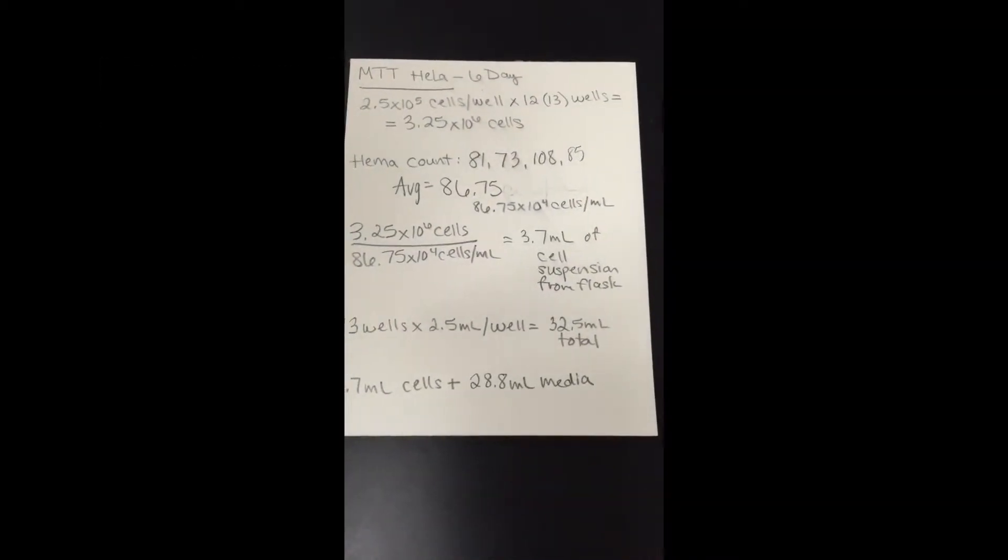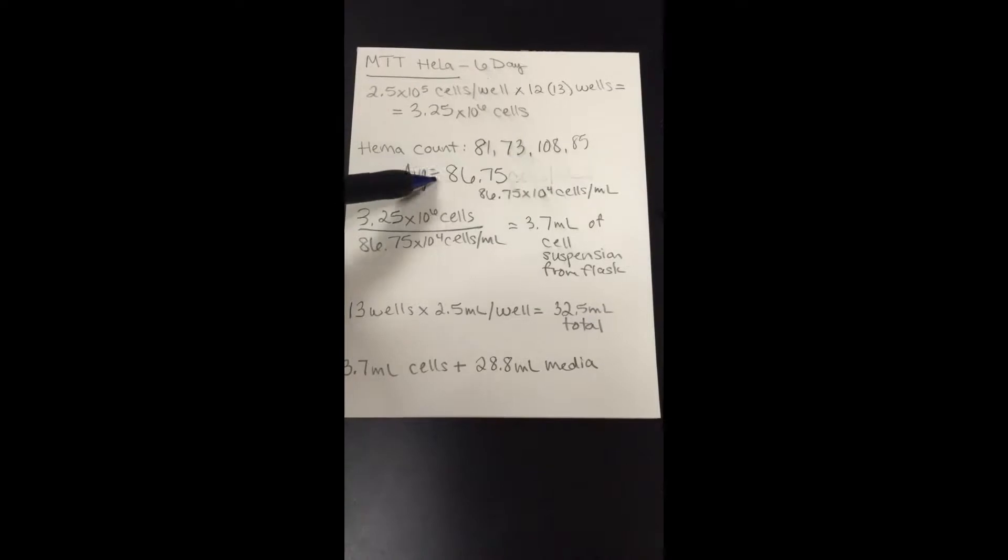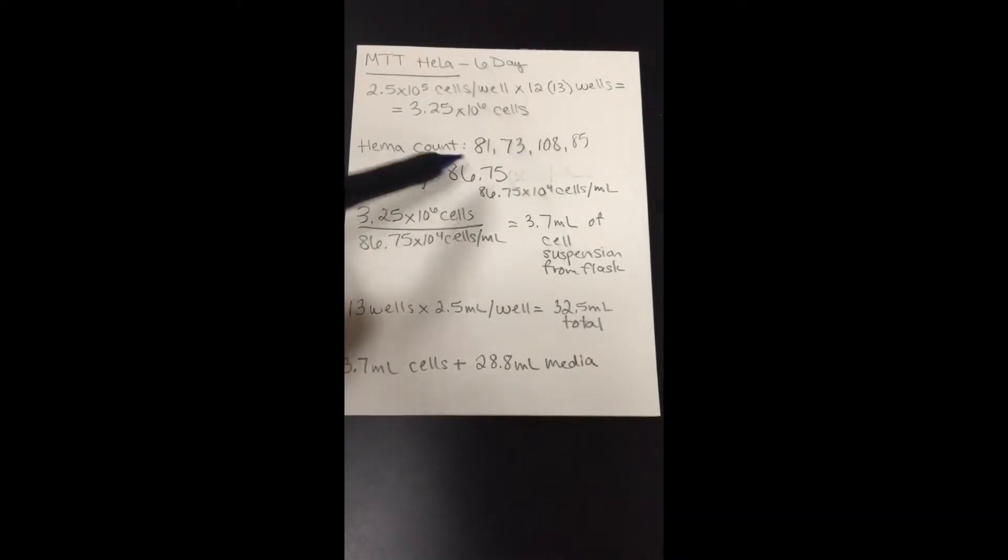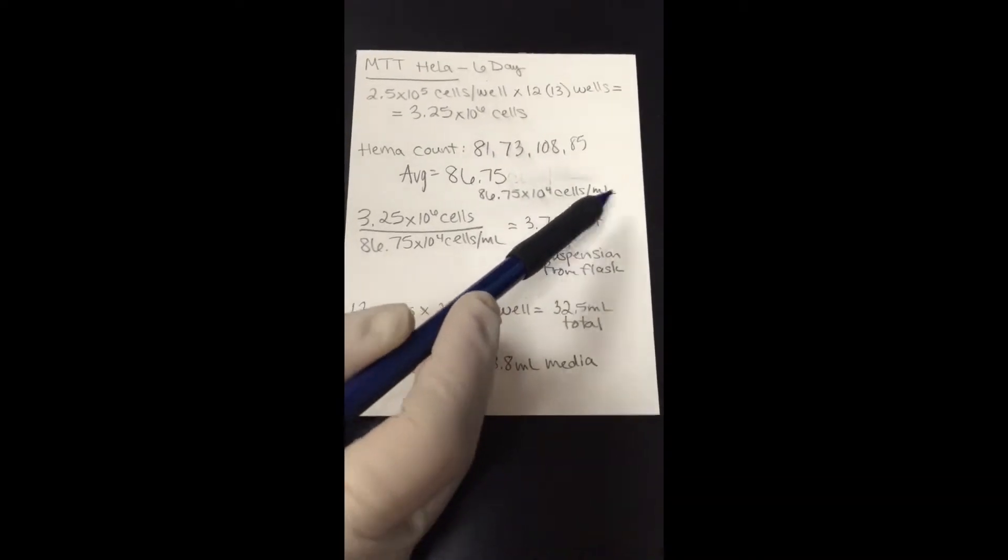Okay, so I just counted all of my cells. My counts are right here. I took the average of these counts and I got 86.75, and 86.75 times 10 to the 4th cells per milliliter is what that gives me.